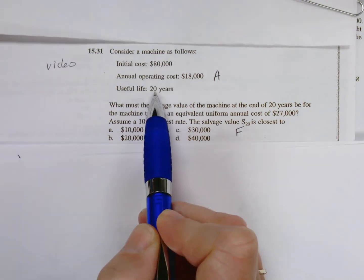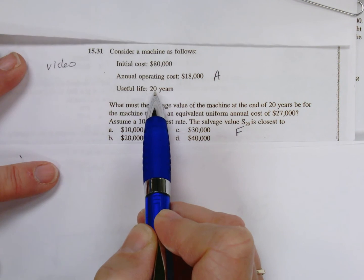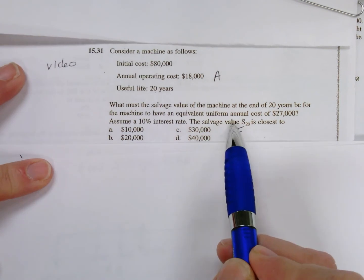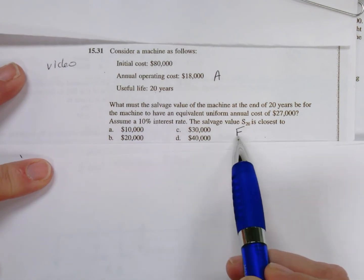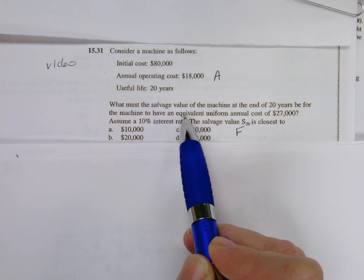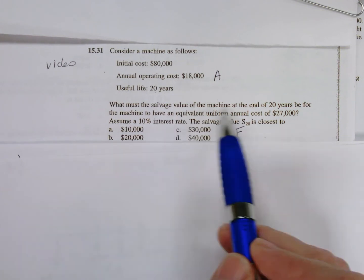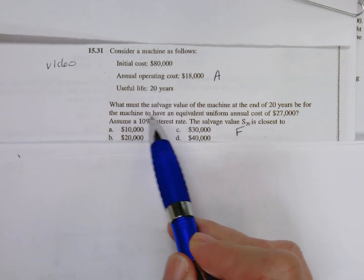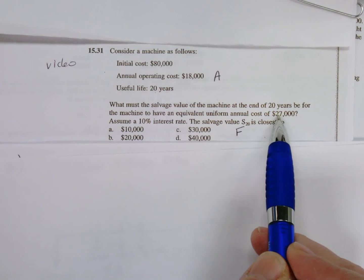What are the proceeds? How much are we going to get for selling that machine in 20 years? That's a salvage value. Since it's a cash flow coming into us out in the future, we give it the value F—it's the future value and that's what we're asked to find. The thing that's kind of funny here is that we want the total machine to have an equal uniform annual cost of $27,000.